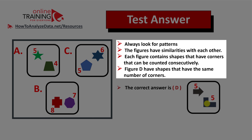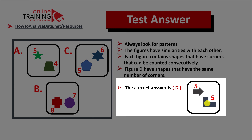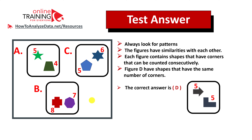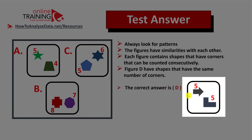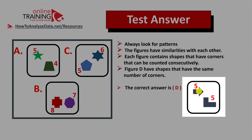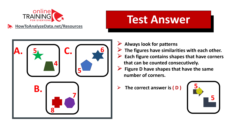The figures have similarities — each contains shapes with corners that can be counted consecutively — but figure d has shapes with the same number of corners. So the correct answer is choice d. Also note: the arrow in some choices may not be considered a traditional shape at all, which is another path to the right answer.